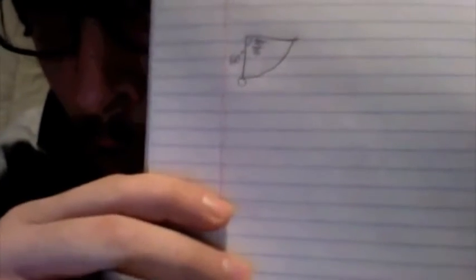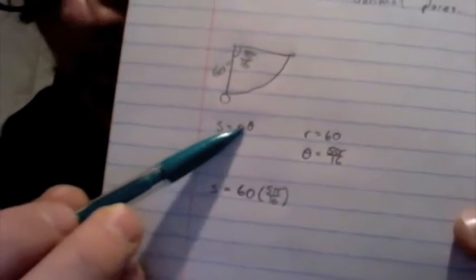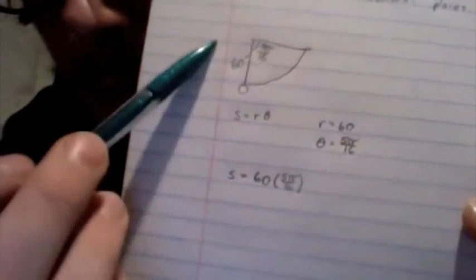So let's set up the formula. So we have our formula. This is the formula to find arc length, s equals r theta, r being 60 inches, and theta being 5 pi over 16.